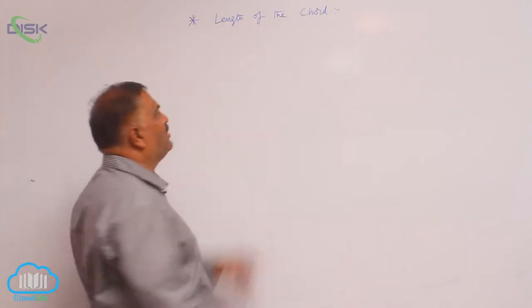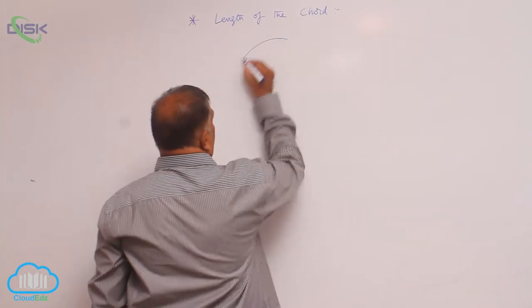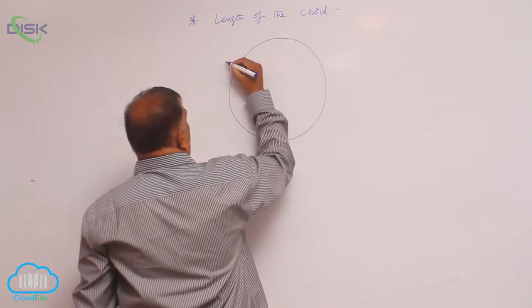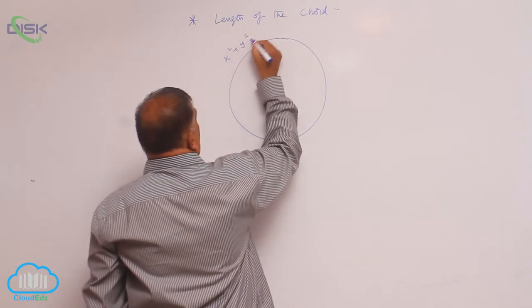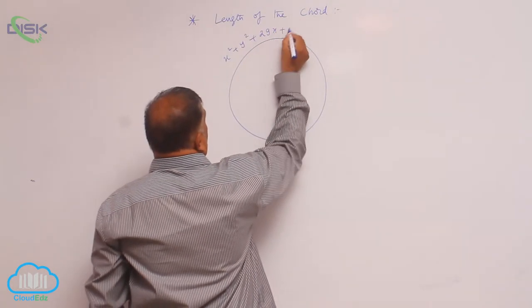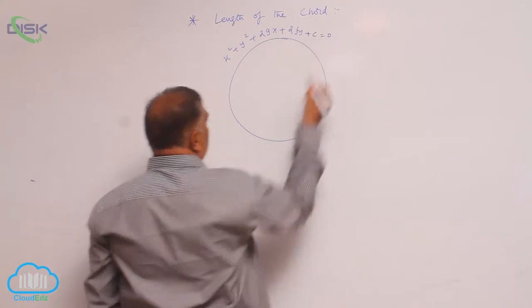We will discuss about length of the chord. Let us consider a circle equation here: x square plus y square plus 2gx plus 2fy plus c is equal to 0.